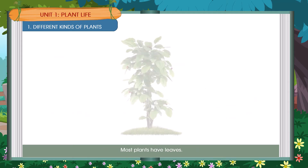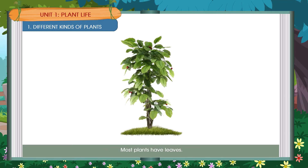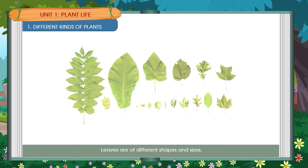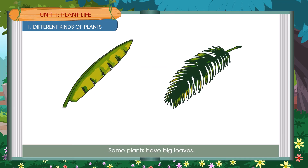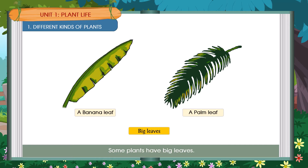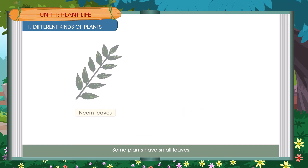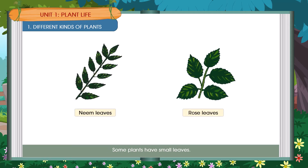Most plants have leaves. Leaves are of different shapes and sizes. Some plants have small leaves. A Banana Leaf, A Palm Leaf are examples of big leaves. Neem Leaves and Rose Leaves are examples of small leaves.